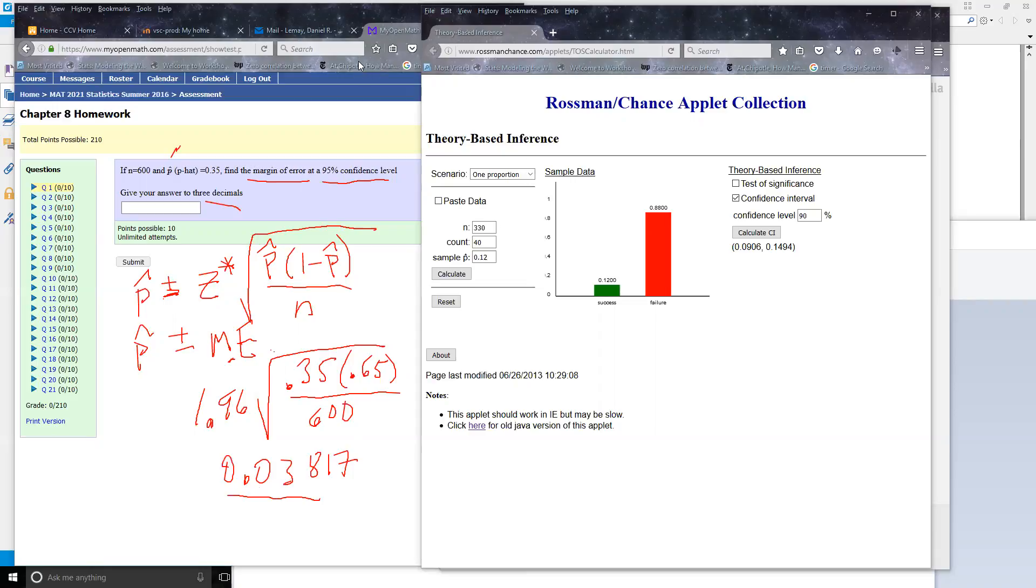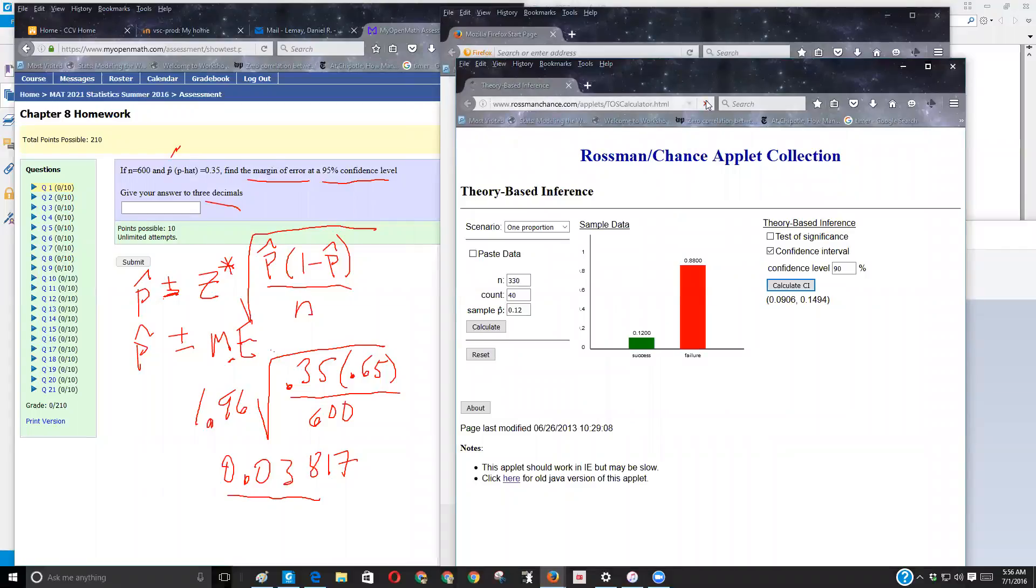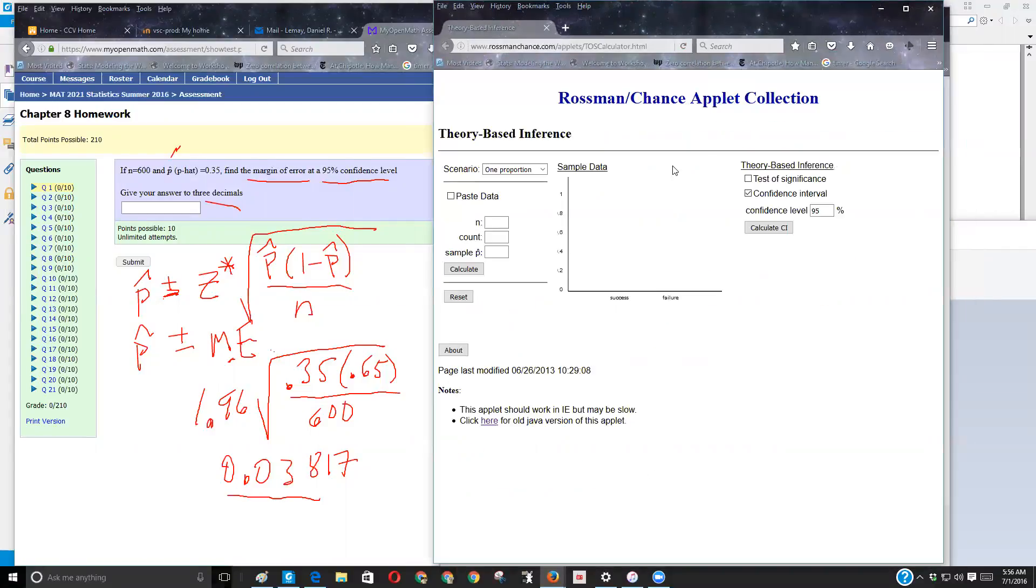Here, let me go back to, let me refresh this page here. Okay, so here is that Rossman-Chance applet.